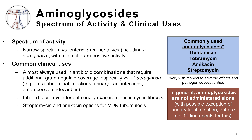In contrast to the tetracyclines, the aminoglycosides are narrow-spectrum agents, primarily active versus gram-negative bacilli. Commonly used representatives are seen in the blue box. Common clinical uses include double coverage or use in combinations requiring additional gram-negative coverage, especially for severe Pseudomonas aeruginosa infections, including intra-abdominal infections, urinary tract infections, and enterococcal endocarditis. Inhaled tobramycin might be used for pulmonary exacerbations in cystic fibrosis. Streptomycin and amikacin are options for multi-drug-resistant tuberculosis, often in combinations with three, four, five, or even more antibiotic options.